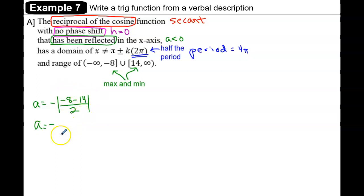Next we're going to find the b value. To find b, we take the period of the parent function, which is 2π,